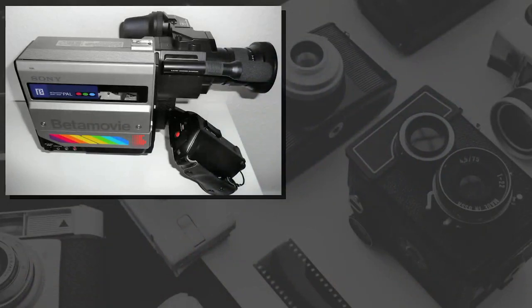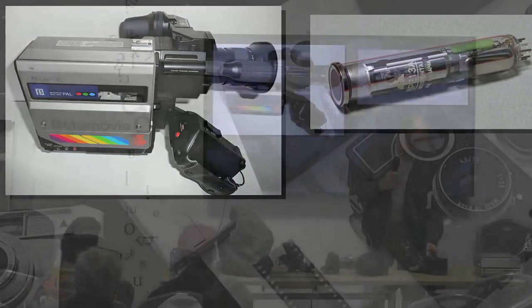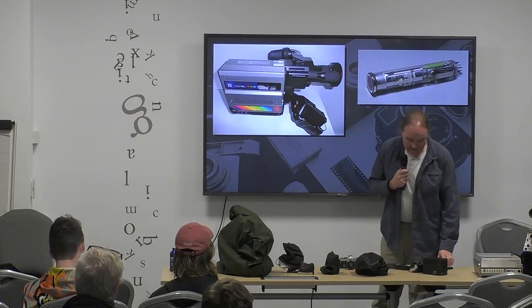It wasn't until 1983 that what we'd recognise as a camcorder became practical and available to the public. This was the Sony Beta Movie BMC 100 - the first camera system that was all in one package: recorder, optics, lens, and batteries, all in one thing. It was a marvel of its time but early technology. It used a glass vacuum tube to sense the image - focused onto a little ring at the front, with electronics reading off the picture and storing it onto Betamax tape, similar in size to VHS tape. This dictated the size of the whole camera - you couldn't make it much smaller than the tape it was recording to.